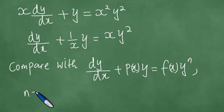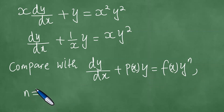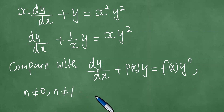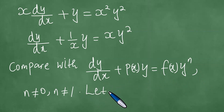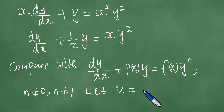This is valid for integers n, but we recommend its use when n is not zero and when n is not one, because when n is zero or n is one, this becomes a linear equation which is very easy to solve. And so we compare with this. We let u be equal to y to the power 1 minus n.